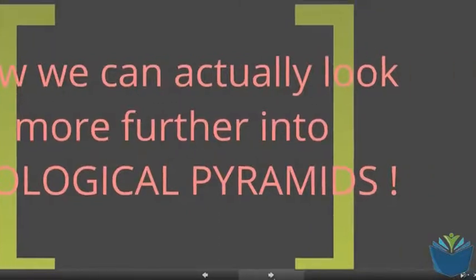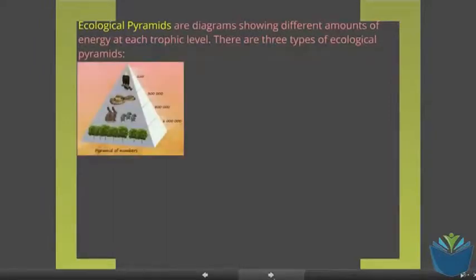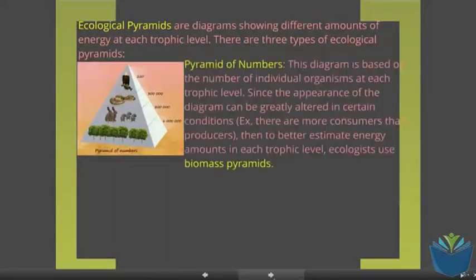Now we can go on to look at the different types of pyramids. With ecological pyramids, there are three major types. The first one is a pyramid of number which simply states the number of organisms found at each trophic level.